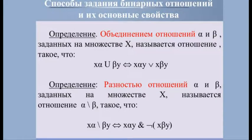Разностью отношений α и β называется отношение α−β такое, что xα−βy тогда и только тогда, когда xαy и не xβy. Пример: разностью «не меньше» и «не больше» является отношение «больше». Разностью «быть ребёнком» и «быть дочерью» является отношение «быть сыном». Приведённые определения являются перефразировками соответствующих определений для обычных множеств, и все свойства теоретико-множественных операций (пересечения, объединения, дополнения) выполняются и для отношений. Кроме теоретико-множественных операций для отношений вводятся дополнительные операции, связанные с их специфической структурой.